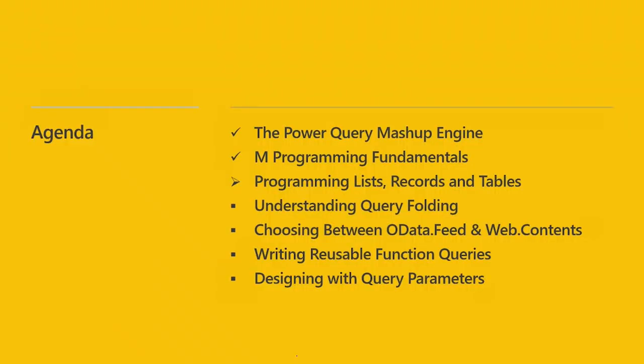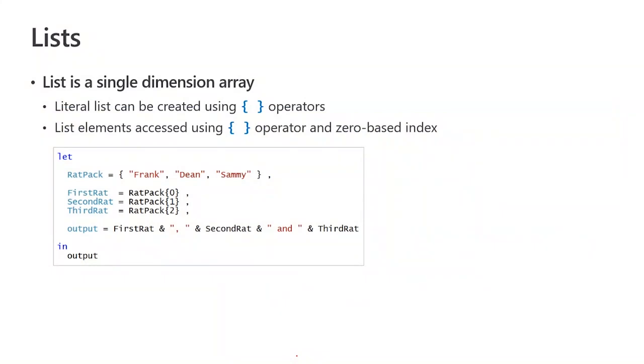Now let's move on and look at richer data structures. If you're going to start programming M, this is a very important part to understand. Q&A: Should we write 'output' or 'var4' at the end of Hello World code? Either one will work fine. On best practices for writing direct query code: most of what we're looking at here works with import mode. Your M code is very limited in direct query — all you can do is write M code that eventually gets translated into SQL that runs at runtime.